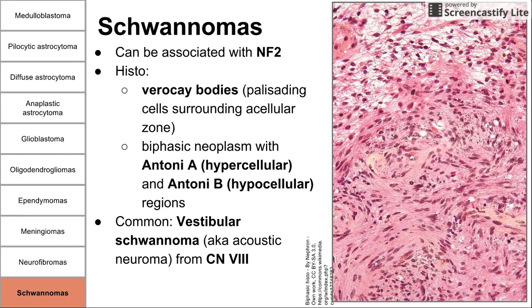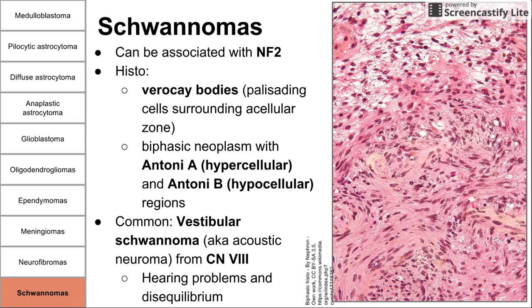This vestibular schwannoma is often called an acoustic neuroma, which is inaccurate for a few reasons: it's not a neuroma but a schwannoma, arising from a Schwann cell, and it originates more from the vestibular part of cranial nerve 8 rather than the acoustic part. Vestibular schwannomas cause hearing problems and equilibrium problems. That's it for this summary of tumors of the nervous system.